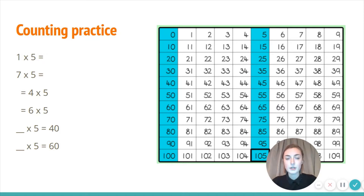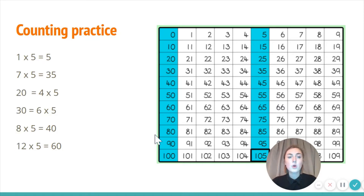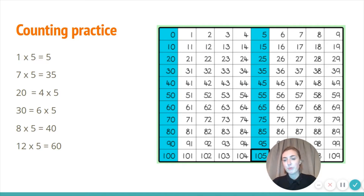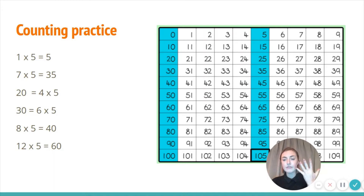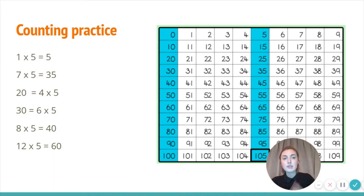Okay, let's have a look. One times five — one lot of five. I didn't need to make a group to do this one because I know that if I've only got one lot of five, that's just five, isn't it? Tick or fix that one.